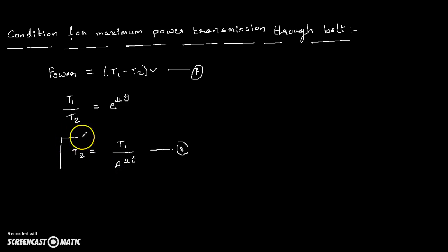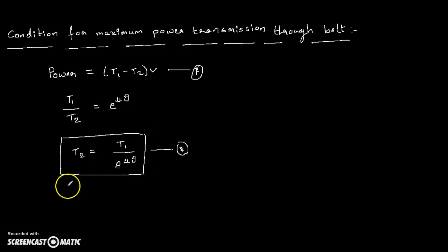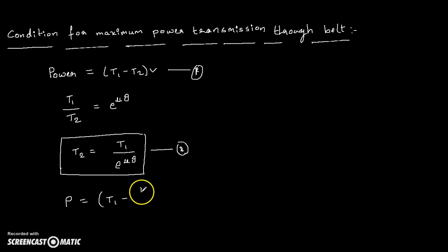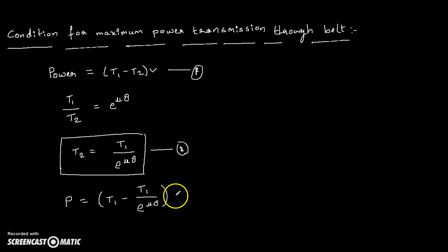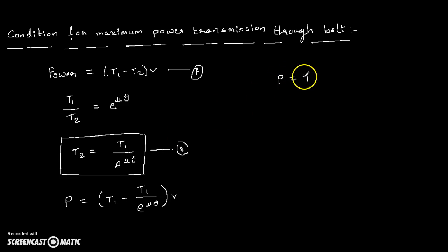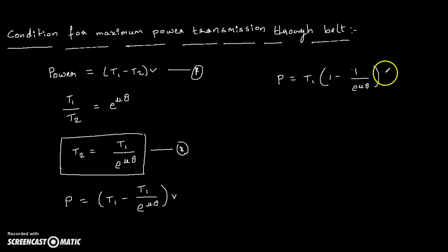Now substitute Equation 2 into Equation 1. Then we can write Power = T1 minus (T1 divided by e^(μθ)), into velocity. Taking T1 as common, Power = T1 × (1 minus 1/e^(μθ)) × velocity.